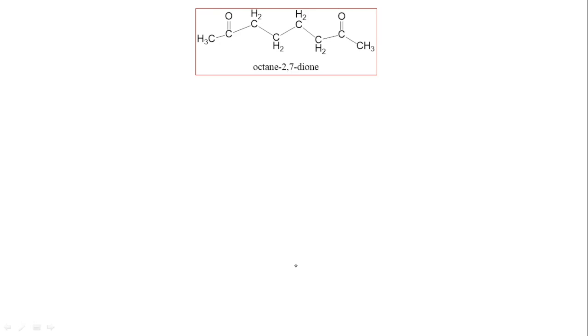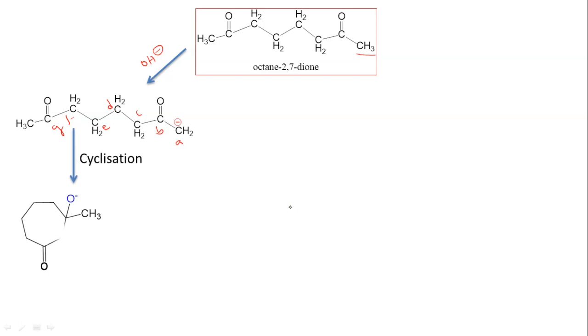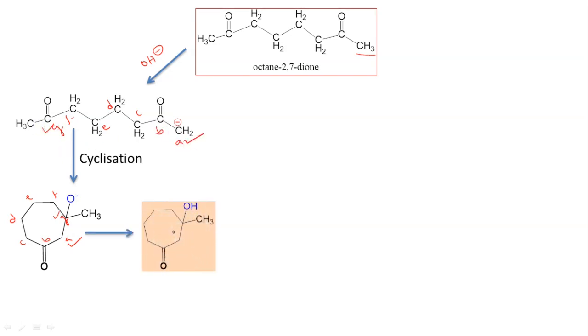Let us take another reactant: octane-2,7-dione. Using a similar mechanism, on removing H+ and reacting with OH minus, you get a carbanion. Labeling carbons A, B, C, D, E, F, G — this on cyclization gives a seven-membered ring ketone, with a bond formed between G and A. This gives the product, which is a minor product.